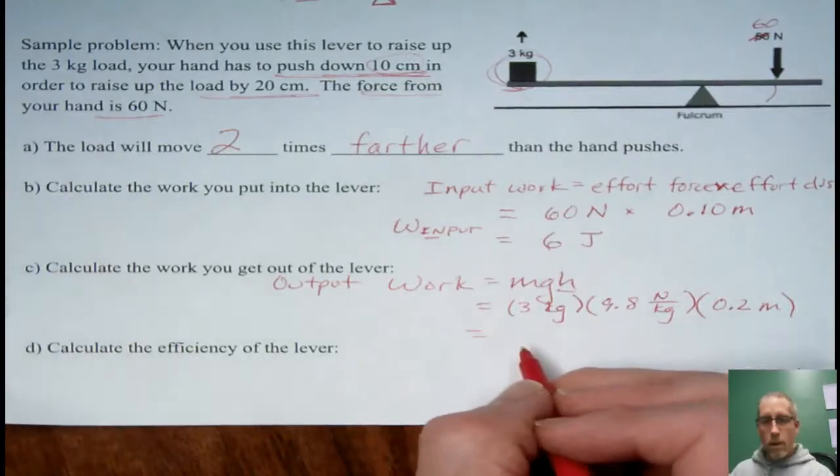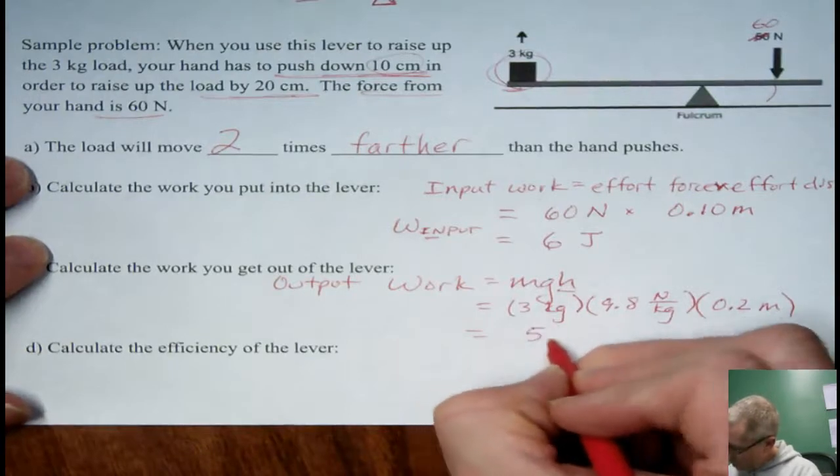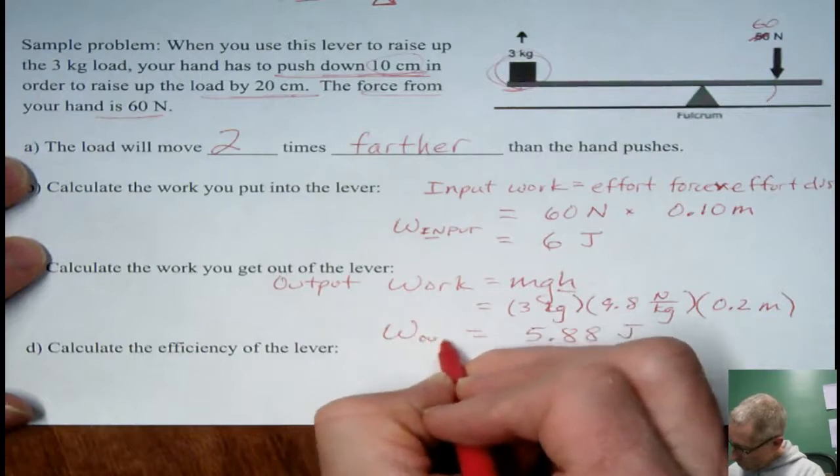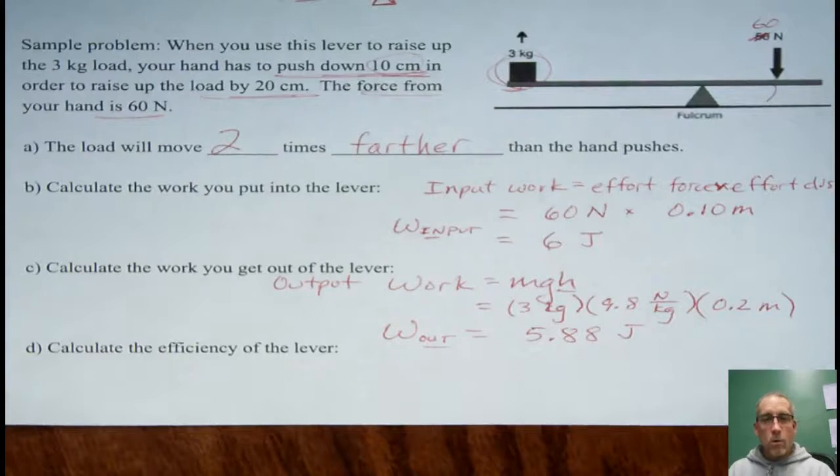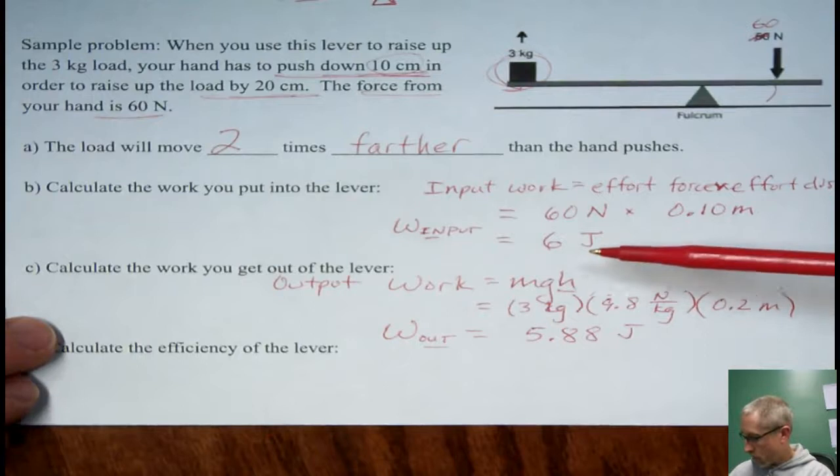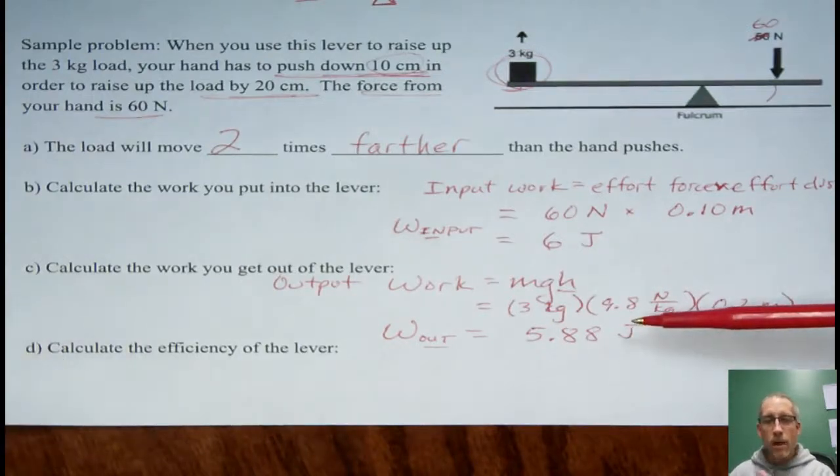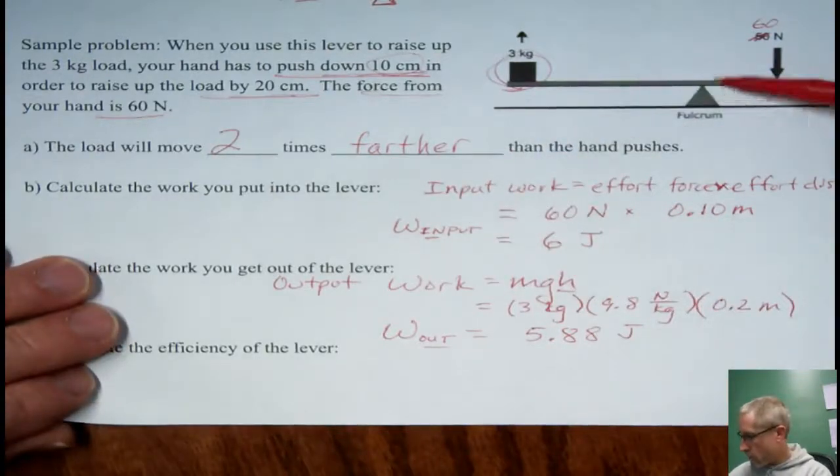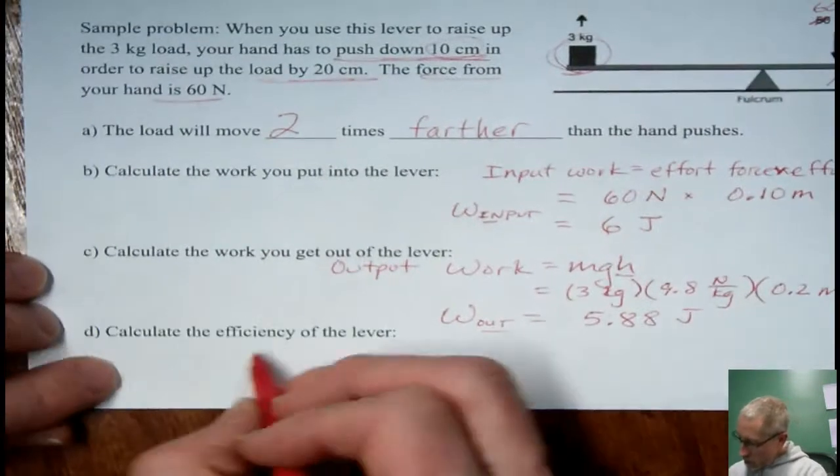And so you grab a calculator and you work through that. I did this earlier. Five point eight eight joules. I'll put a little out here next to the work. So notice that just as always with every machine that we use for real we always have to put in a little more work than we get out. That's because of that friction that happens here where the fulcrum maybe rubs against the platform of the lever.